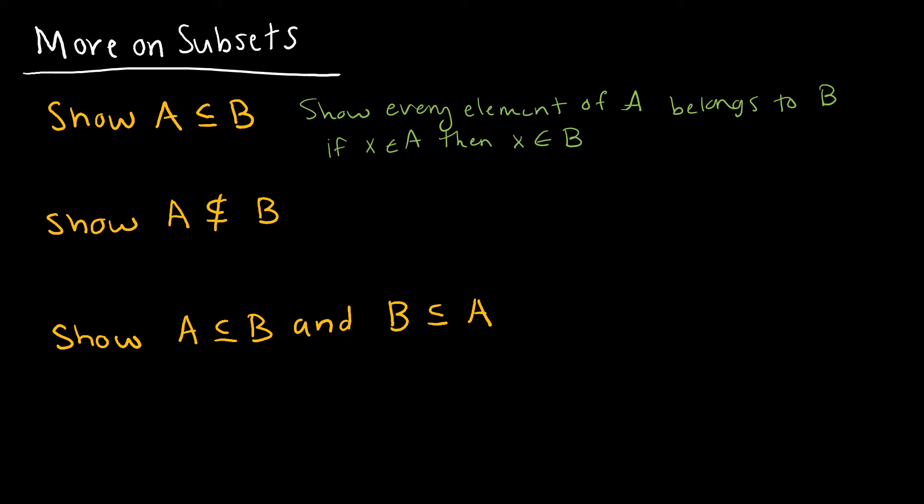Obviously if I want to show that A is not a subset of B, all I have to do is find some example that shows that it's not true. So I'm going to find an element, if there exists some element X that belongs to A that does not belong to B. Show it belongs to set A, but not set B.